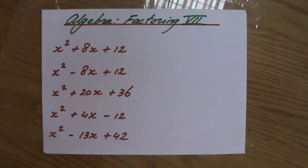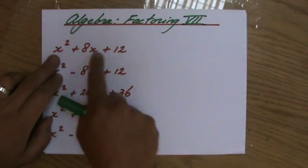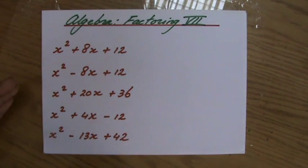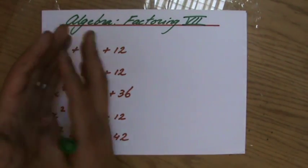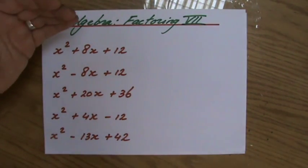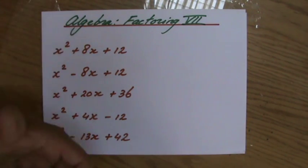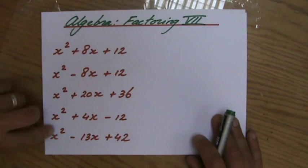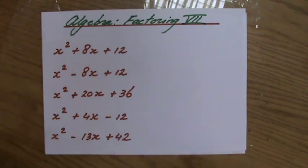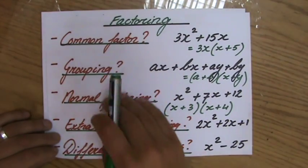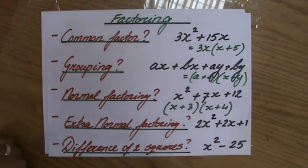If I look at these five example questions, is there a common factor for all three terms? No. And can I factorize any of them by grouping? No, I can't, because with grouping I need four terms. And are they all examples of normal factoring? Yes, they are, because my x squared, all of them, is 1. So while solving these questions, I will not be asking myself these questions every time out loud, but you should.